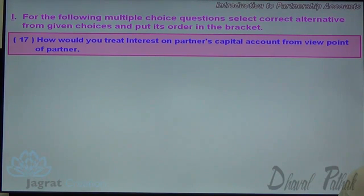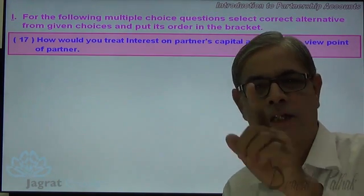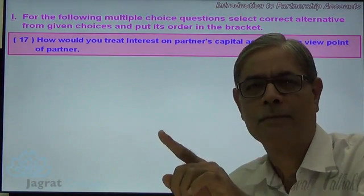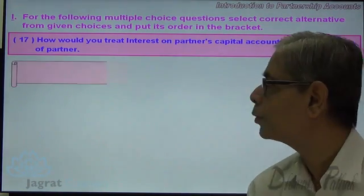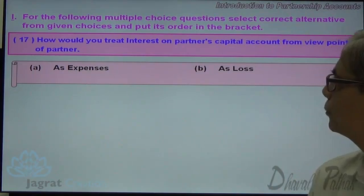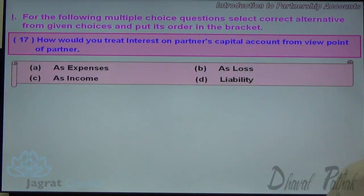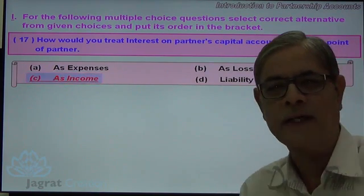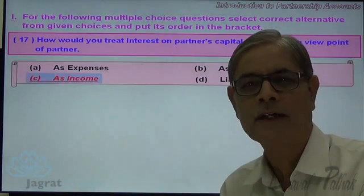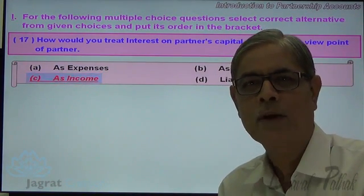Next. How would you treat interest on a partner's capital account from the viewpoint of a partner? Interest on capital is an expense for the firm, but for a partner it is a gain — income. Option C is the correct answer. From the partner's point of view, interest on capital is known as return on investment, and return on investment is considered income or gain to a partner.